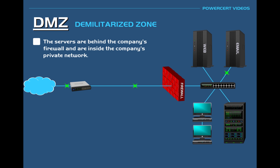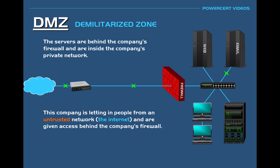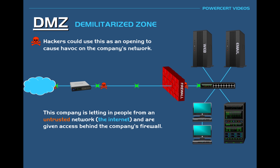Because these servers are behind the company's firewall, they are inside the company's private network. That means the company is letting people from an untrusted network, such as the internet, be given access behind the company's firewall and into the company's private network where the servers are. This could cause a security concern, because as people access these servers, hackers could use this as an opening to cause havoc on the company's network — they've already gotten past the firewall.